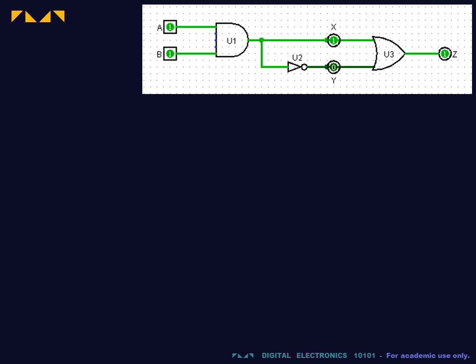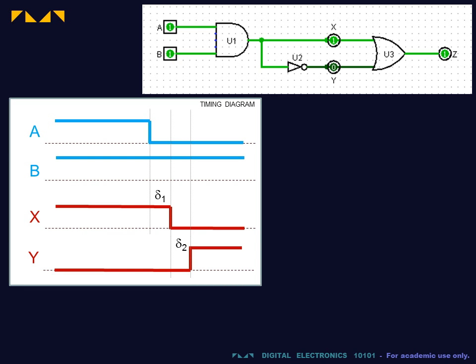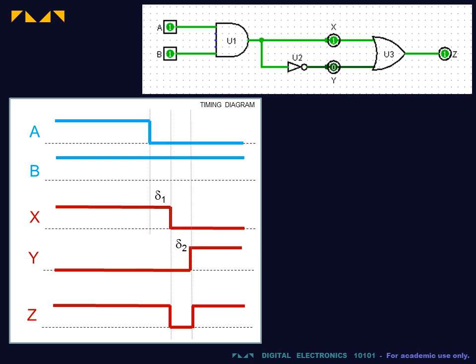This example shows another phenomenon arising from propagation delays. After A transits, X transits, and following the delay of the NOT gate, Y transits. During the period between the transit of X and that of Y, the output Z will temporarily give an incorrect transient state known as a glitch.